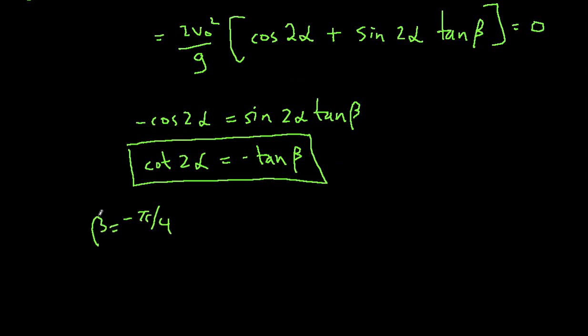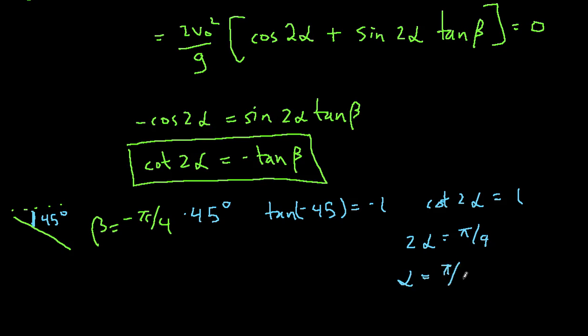So imagine the case of beta equals minus pi over 4. So that's a 45-degree sloping line from the horizon. So that's 45 degrees. So this is pi over 4, or minus 45 degrees. So in that case, tangent of minus 45 degrees, that equals minus 1. So when is cotangent of 2 alpha equal to 1? Well, that occurs when 2 alpha equals 45 degrees. That equals pi over 4. So alpha equals pi over 8, or 22.5 degrees.